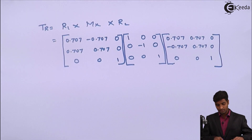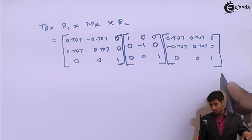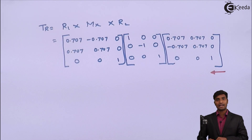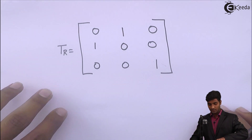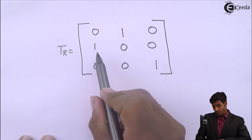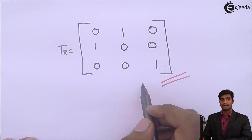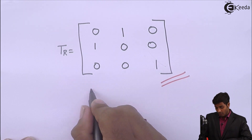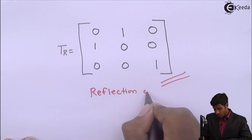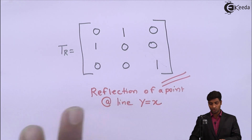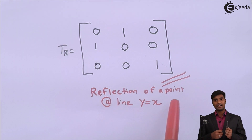After multiplying all these matrices, the final resultant transformation TR is: 0, 1, 0; 1, 0, 0; 0, 0, 1. This is the resultant transformation matrix which we will use for the reflection of any object about the line y is equal to x. Thank you.